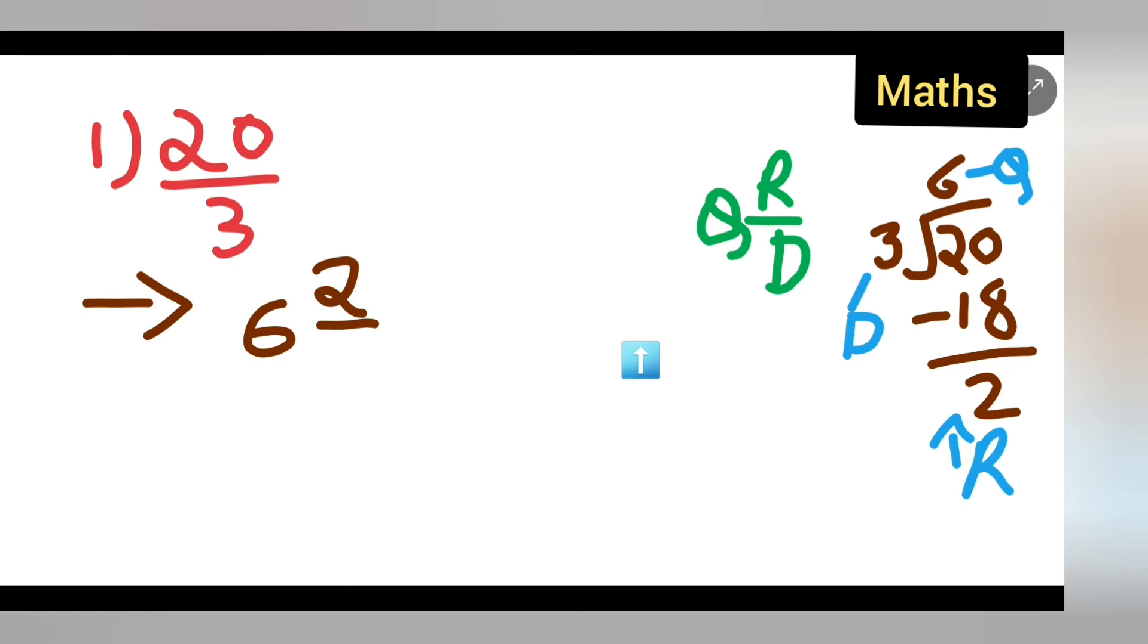Now you wrote it in the mixed fraction. I have expressed the given fraction into a mixed fraction. This is a mixed fraction. Quotient is 6, your remainder is 2, and divisor is 3, so write down 2 upon 3.